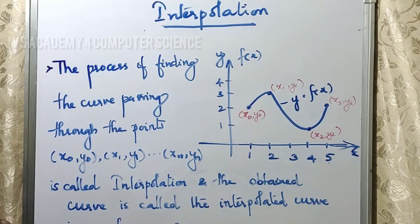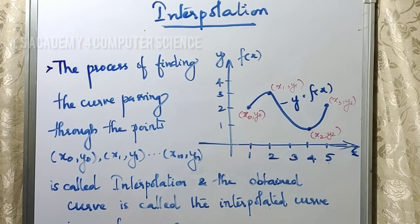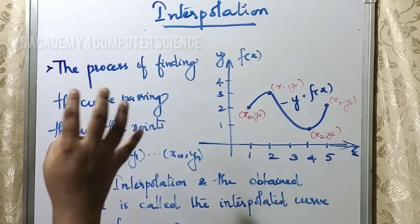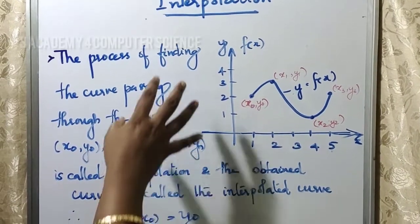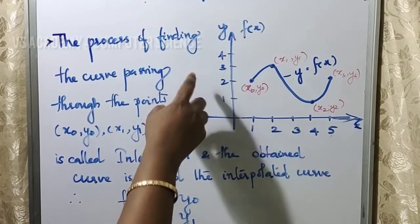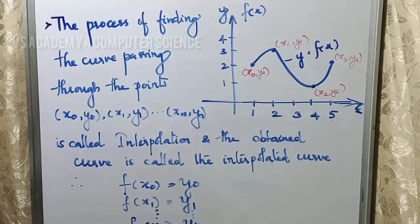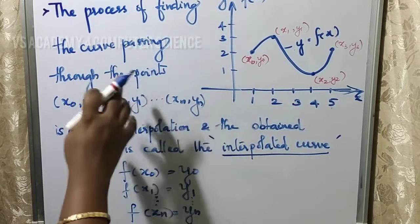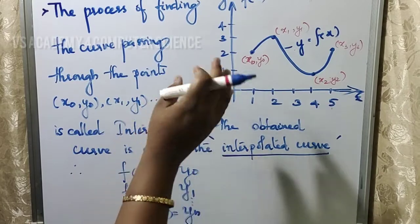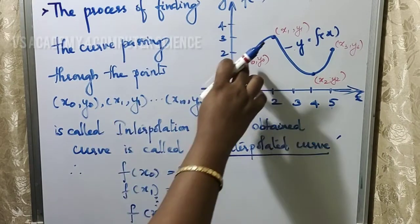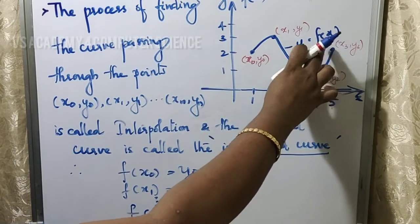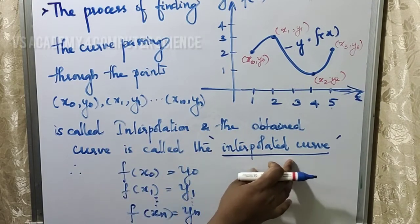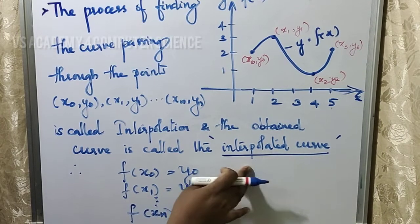But if we don't know the intermediate points, we should find them out using the technique of interpolation. We are going to find a technique — an interpolated curve — to determine those points. It is the process of finding a curve from intermediate points, and the curve obtained from those points is called an interpolated curve.